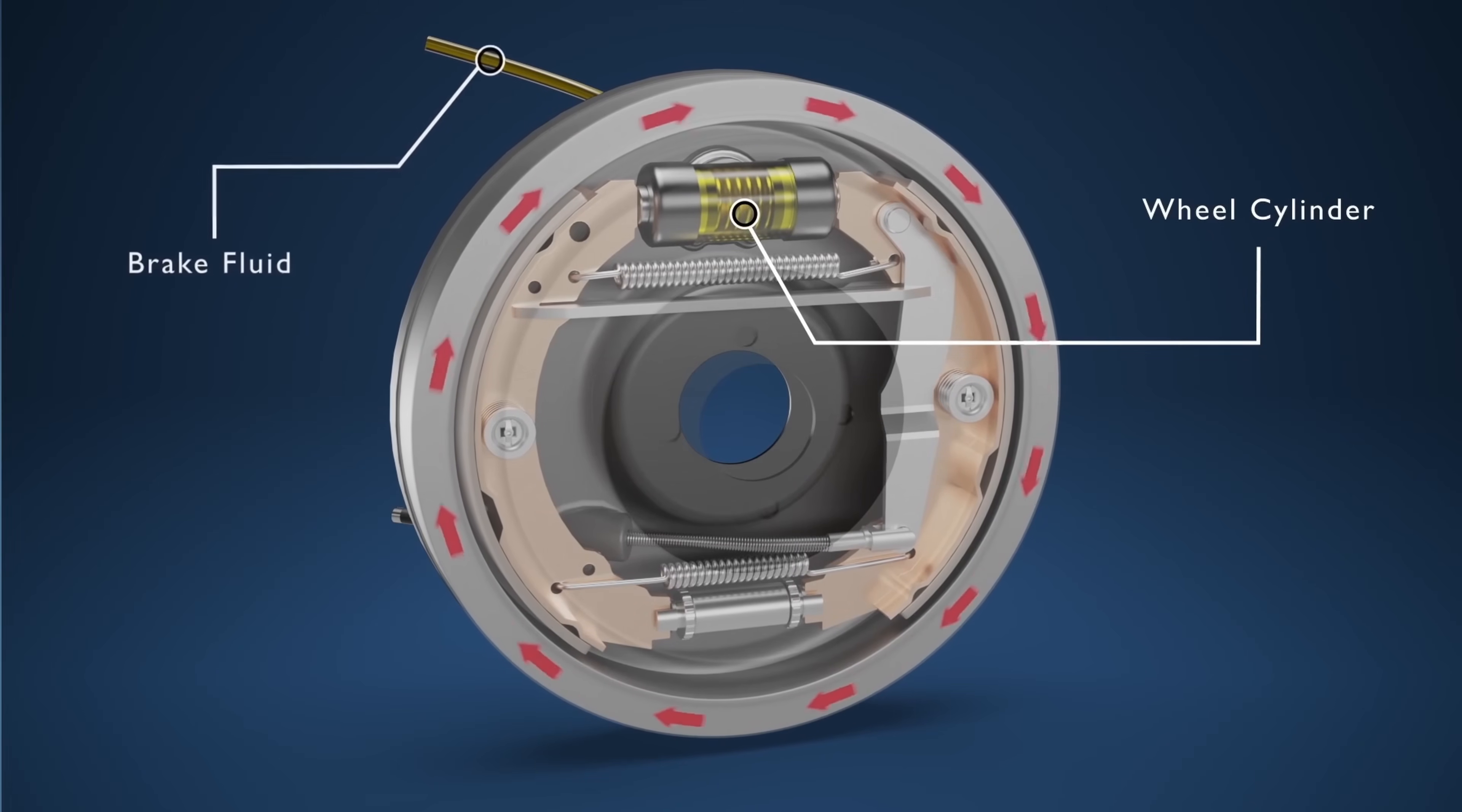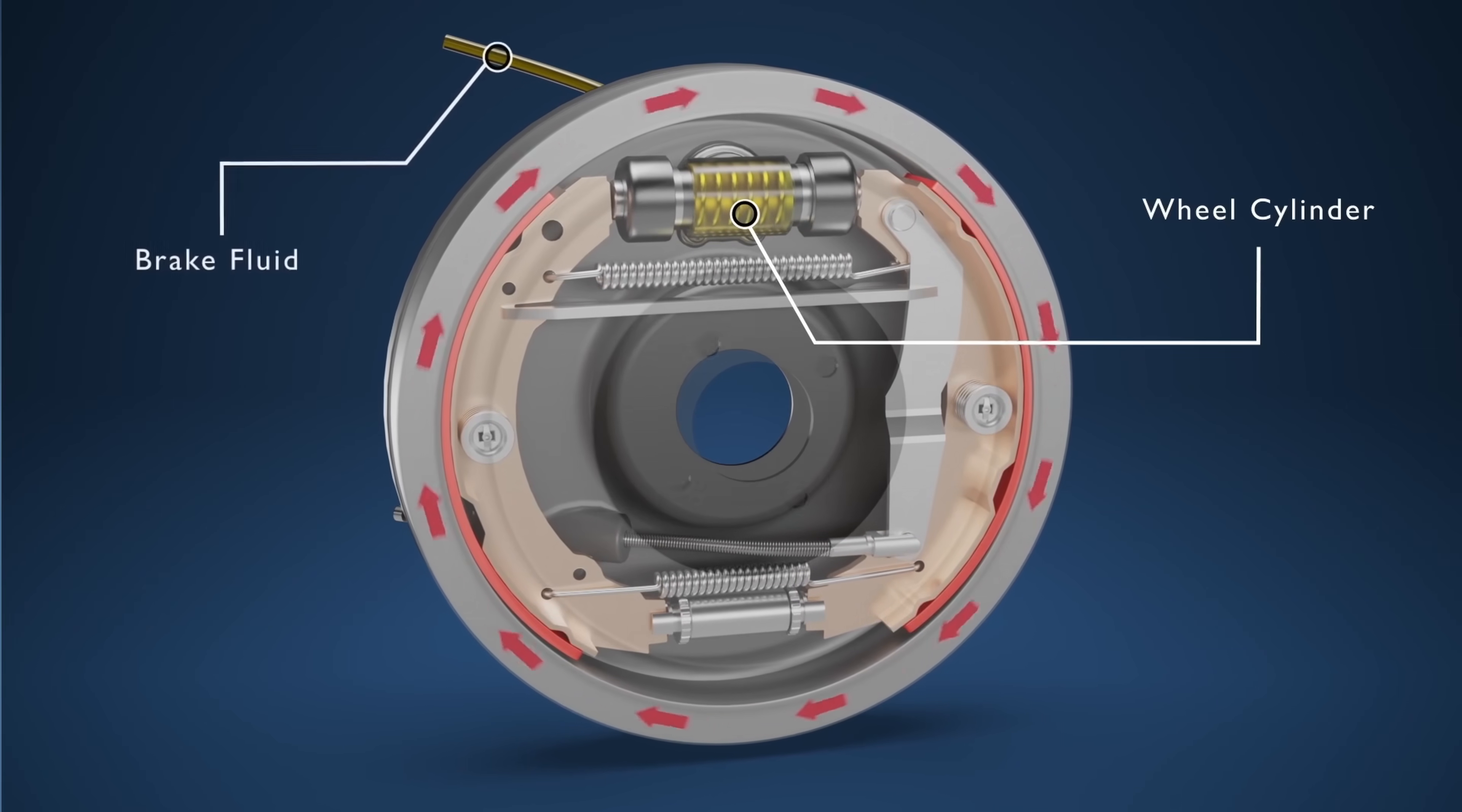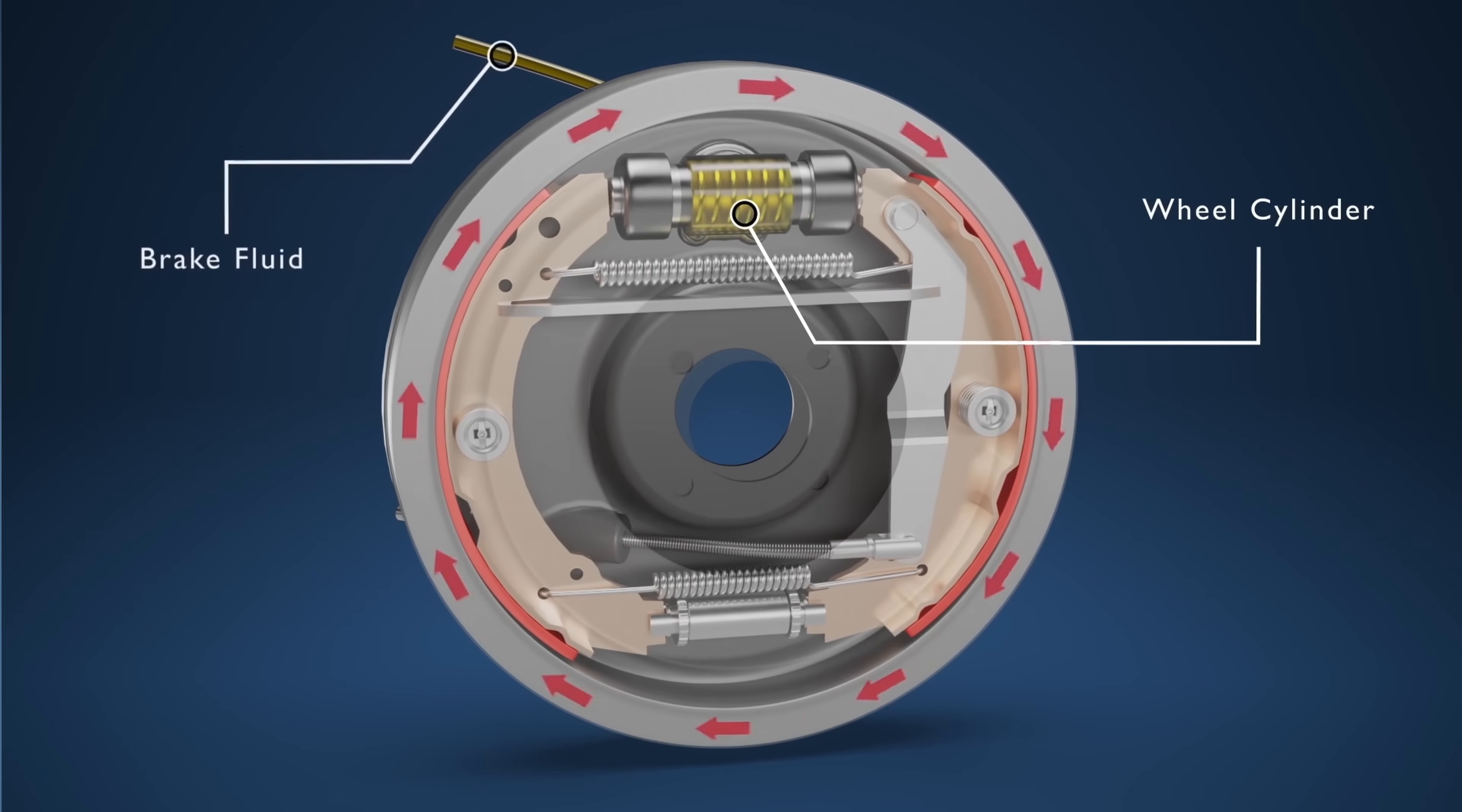On vehicles equipped with drum brakes, the brake fluid actuates a wheel cylinder that pushes the brake shoes against the inner surface of the brake drum to create the same effect.